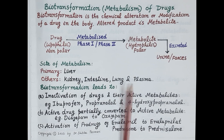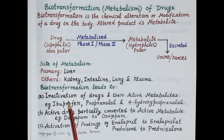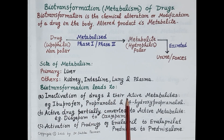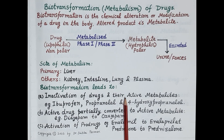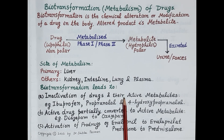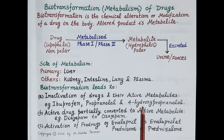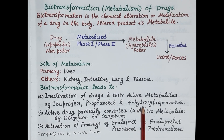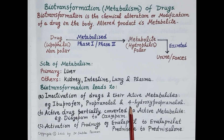Other tissues or organs where drugs are metabolized are the kidney, intestine, lung, and plasma. Biotransformation or metabolism of drugs leads to inactivation of the drug and inactivation of its active metabolite, meaning the drug is inactivated and its active metabolite is also inactivated, so that the drug is completely removed from the body. For example, ibuprofen and propranolol — propranolol produces an active metabolite, 4-hydroxypropranolol. Both propranolol and 4-hydroxypropranolol are inactivated by the biotransformation reaction so they are completely removed from the body.